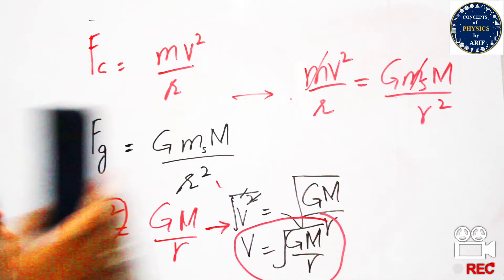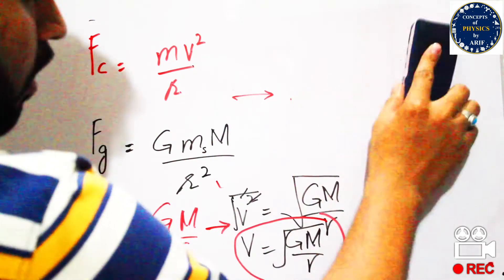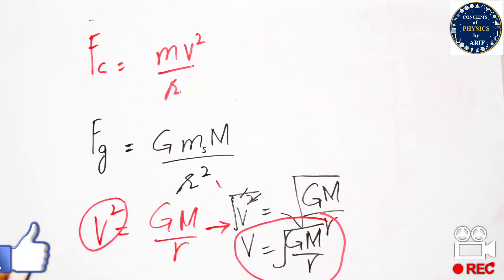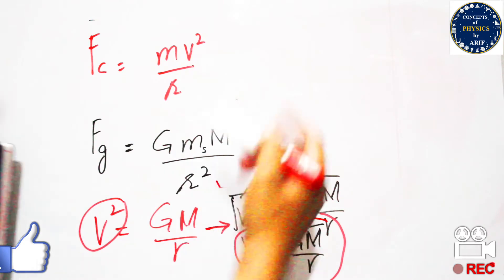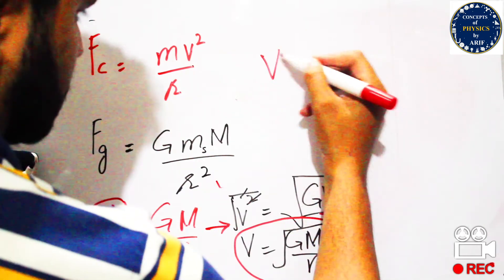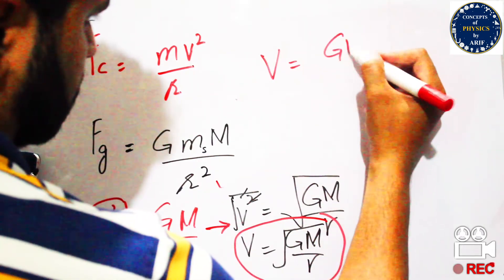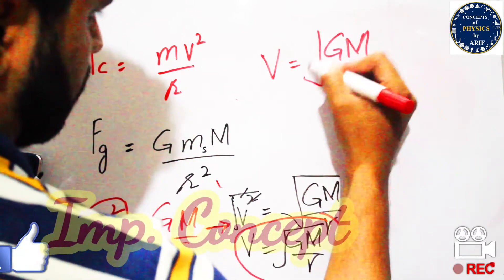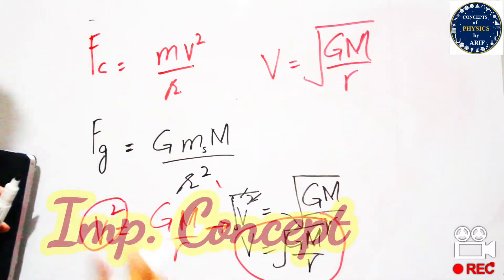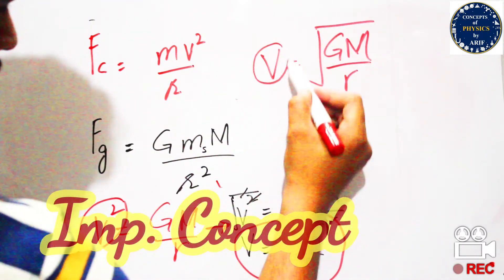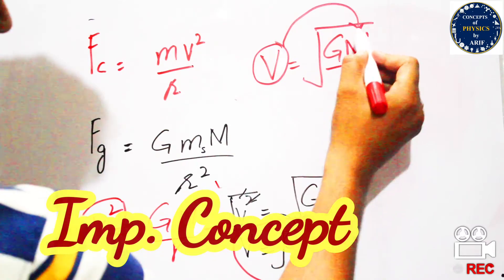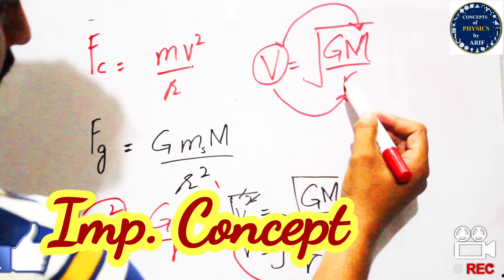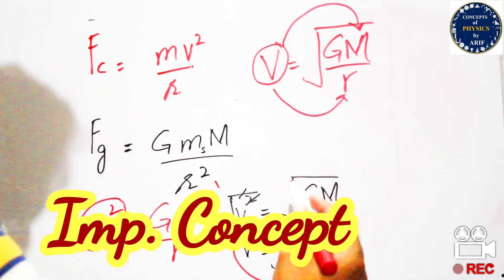From this formula we can see that orbital velocity does not depend upon the mass of the satellite. The velocity is equal to √(GM/r), meaning it only depends on the mass of the Earth and the radius of the circular orbit.